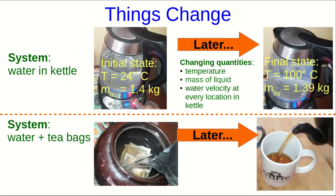For the water and tea bag system, the change in state is that the color and taste have changed. You might worry that those aren't really measurable in the sense that you'd usually think of, but we could connect the color with the fraction of light that gets transmitted at different wavelengths, and we could connect the taste with concentrations of various chemicals. And of course there would be many other measurable quantities that we could also track, but probably for making tea, the color and taste are what we're interested in.